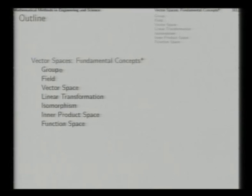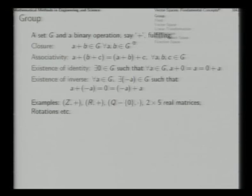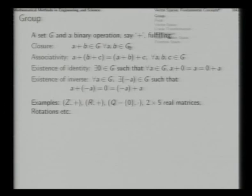First, the group. The mathematical structure of a group is defined with the help of a set G and a binary operation, denoted by the sign plus, fulfilling these relationships. The first relation is closure — that is the definition of the binary operation — that two members in the set through this binary operation produce a result which is also in the same set G. That means the binary operation is defined within that set.